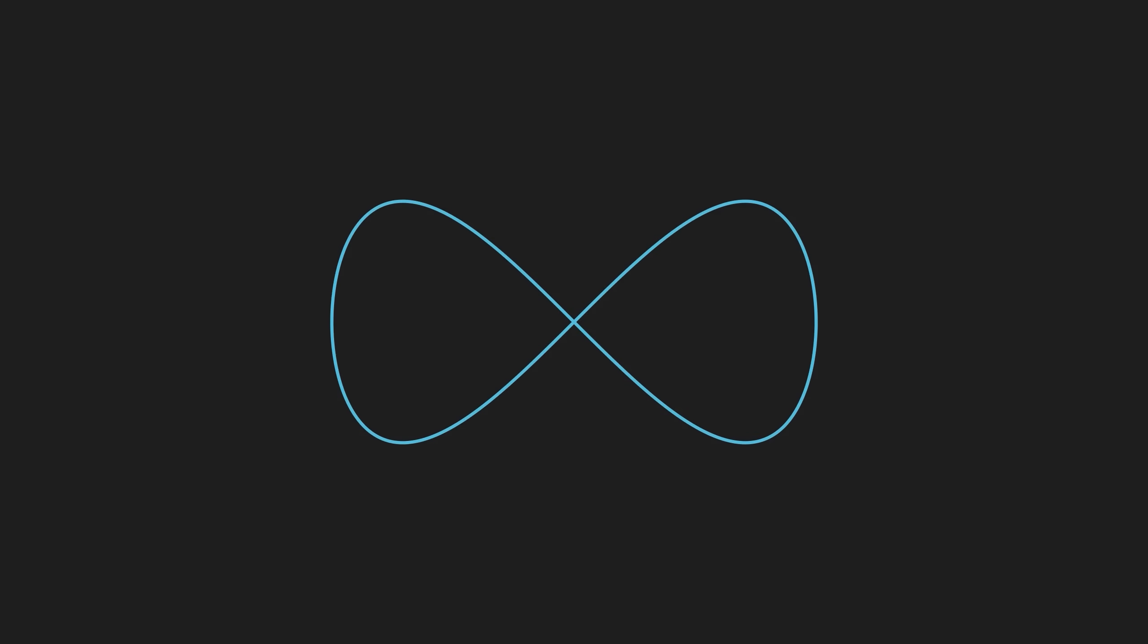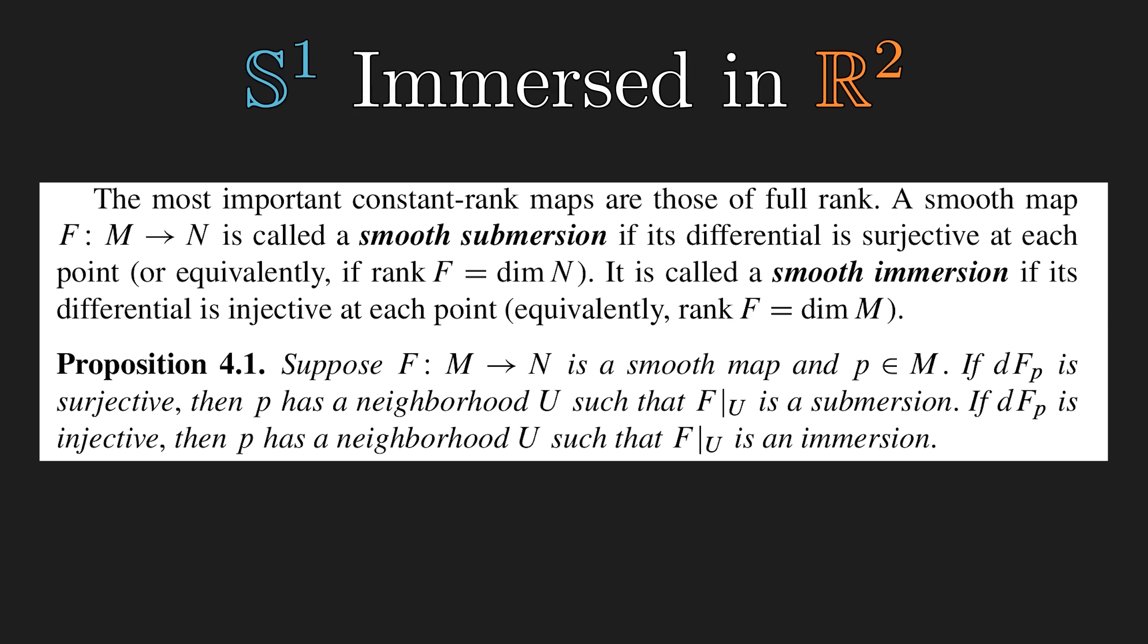Now, we need to introduce a weaker notion than embedding, called immersion. Roughly speaking, it's like an embedding, but we allow self-intersections. But if you look at any formal textbook definition, immersion has nothing to do with self-intersections. So what does it actually mean?